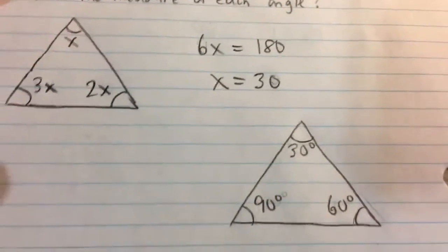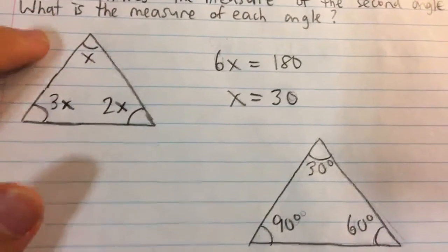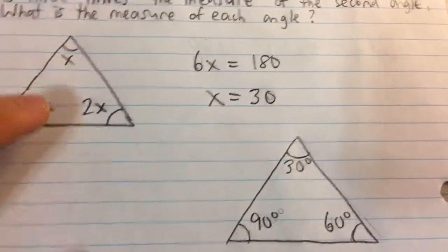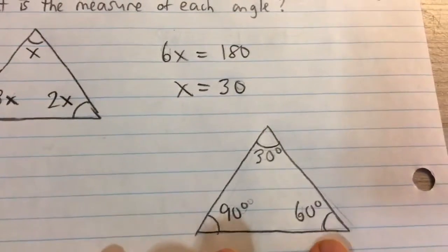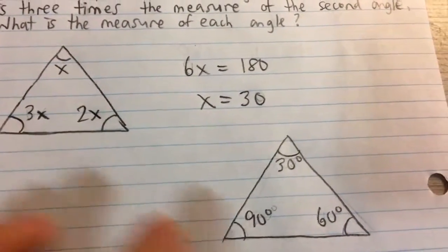So now this gives us three angles of the triangle. The angle at the top is just x, so that's 30. The angle over here is 2 times x, that's 60, and the angle on the bottom left is 3 times x, that's 90 degrees.